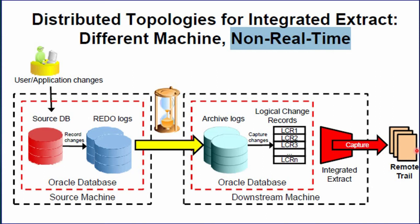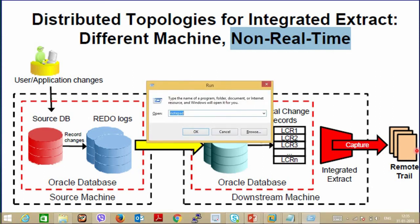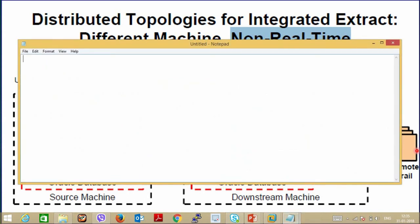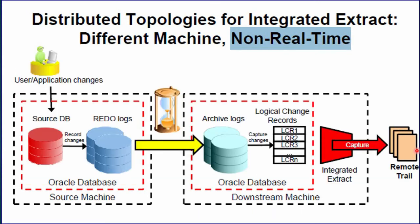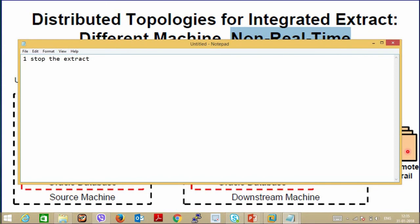Let's see how to convert from Classic Capture to Integrated Capture. There are certain commands for this conversion. First, we have to stop the extract process — the command is: STOP EXTRACT <ext_name>. Next, we have to register the extract process using the command: REGISTER EXTRACT <ext_name> DATABASE. Suppose 'ext' is the name of the extract process. We execute this command to register the extract process at the replication site.